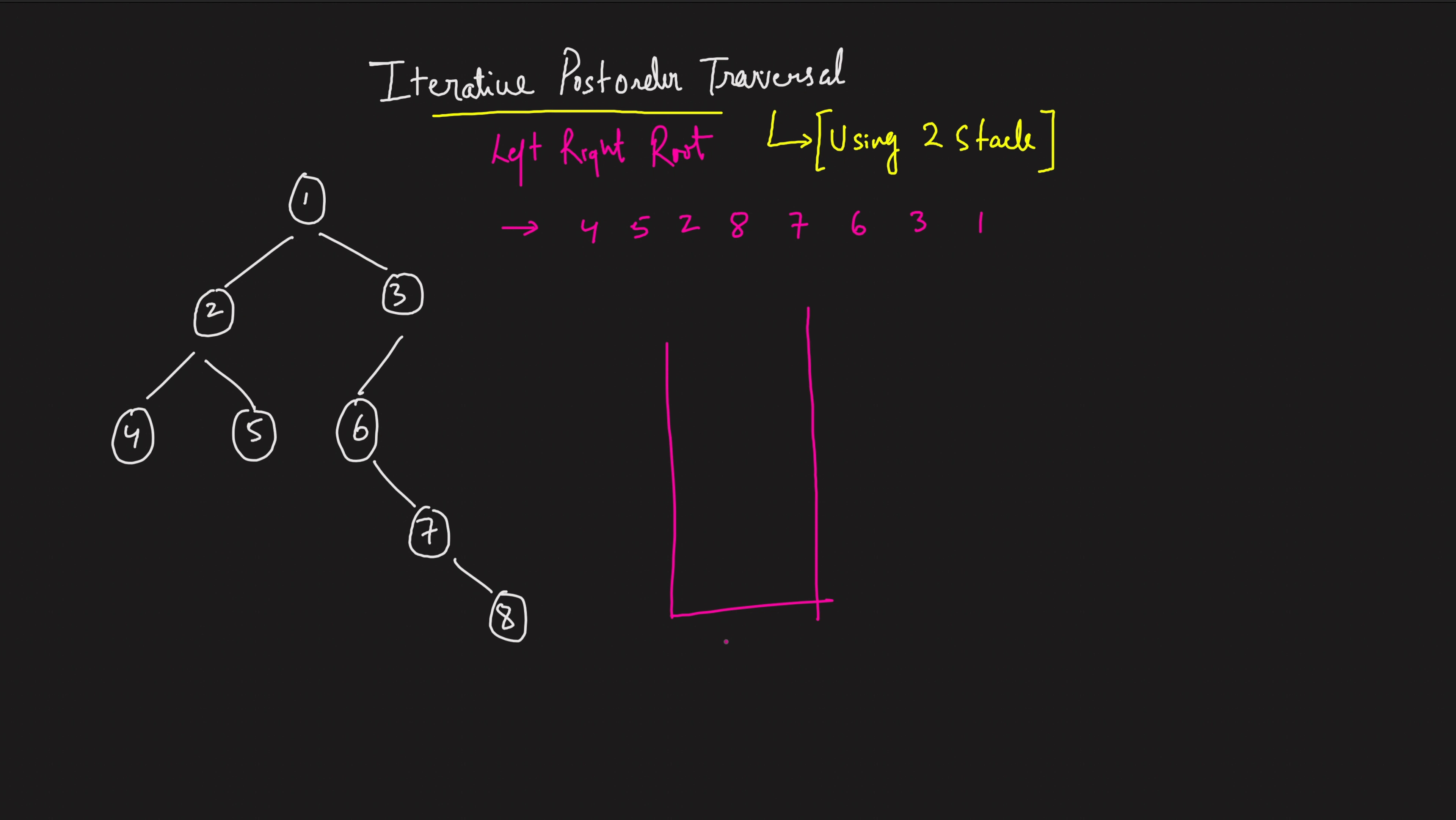What we will do is, we will initially take two stacks. This is the first stack, stack one that I take, then I'll be taking stack two. So let's take stack two. Now what you will do initially is, you'll take the root of the tree, and you'll enter that into the stack one. That's the initial configuration. Now let's get started.